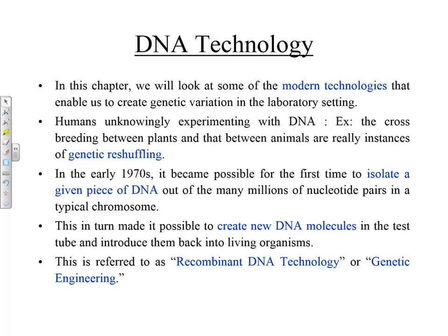In the early 1970s, about 40 years ago, it became possible for the first time to isolate a given piece of DNA out of the many millions of nucleotide pairs in a typical chromosome. This made it possible to create new DNA molecules in the test tube and then introduce them into living organisms. This is referred to as recombinant DNA technology or genetic engineering, and you can do all those things right now in the lab.